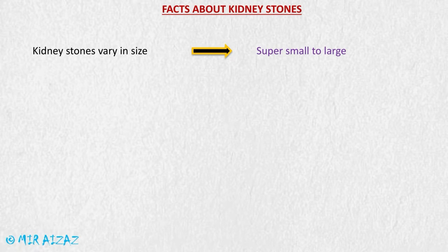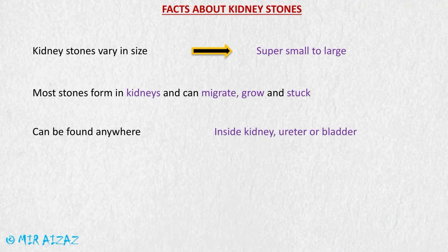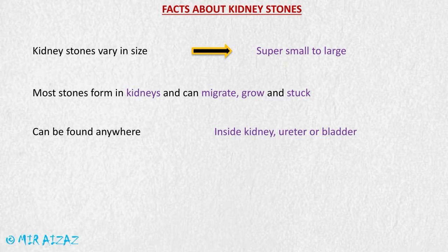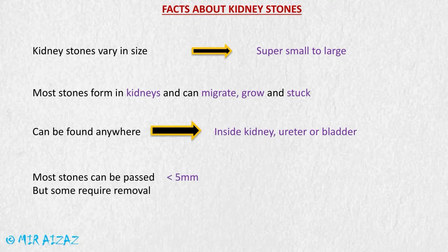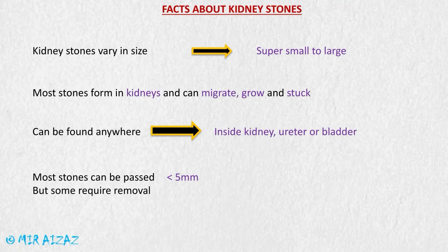Kidney stones may vary in size — they can be as small as a grain of salt or as large as a walnut. Most stones form in the kidneys and can migrate to other parts of the urinary system like the ureter, urethra, or urinary bladder, where they may grow and impair urine flow. Stones less than five millimeters in diameter can often pass easily, but their movement causes severe pain. Larger stones greater than five millimeters require procedural removal.